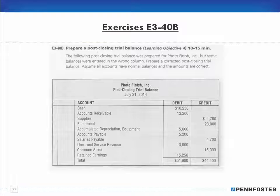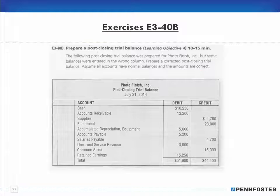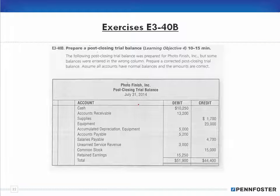This problem says the post-closing trial balance was prepared for Photo Finish, but some of the balances were entered in the wrong column. Prepare a corrected post-closing trial balance. Assume all accounts have normal balances and the amounts are correct. Basically, what we have here is amounts in the incorrect columns. I'm not going to reproduce the entire post-closing trial balance — I'll go through and show the corrections and just do the math.